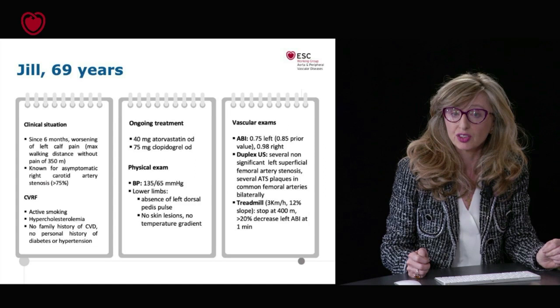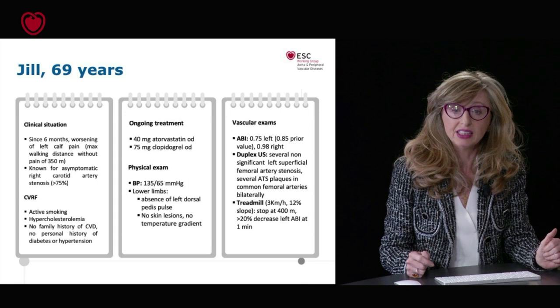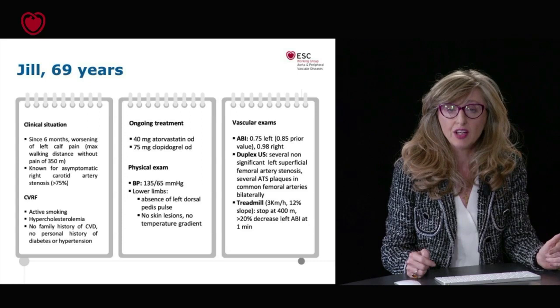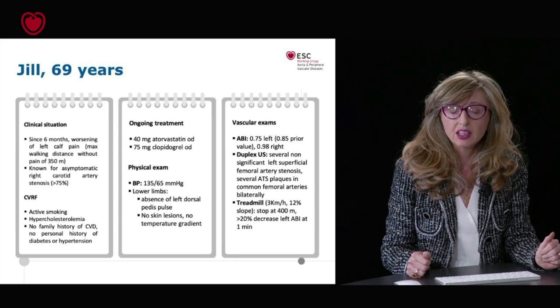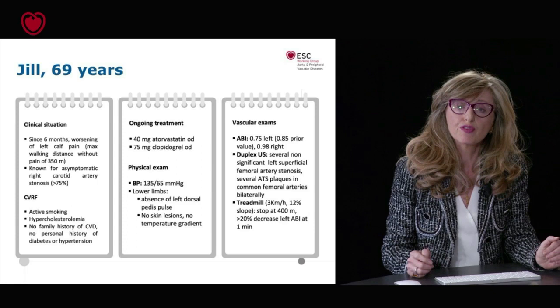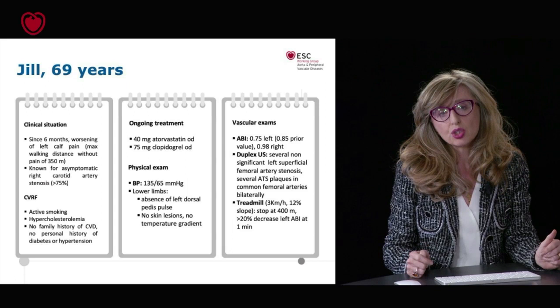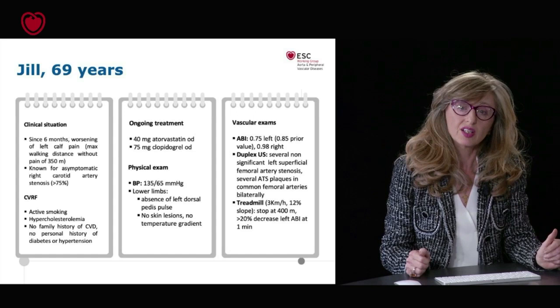When we examine her, she's normotensive. When we look at her lower limbs, we don't palpate the left dorsal pedis artery, but she has no skin lesion and no temperature gradient. On vascular examination, ABI is 0.75 on the left, which is worse than her prior visit value of 0.85, and normal on the right side. On ultrasound, we see several non-significant superficial femoral artery stenosis on the left and atherosclerotic plaques in the common femoral artery bilaterally. The treadmill test shows she can walk a maximum of 400 meters, and at rest there is a decrease of more than 20% in ABI at one minute.